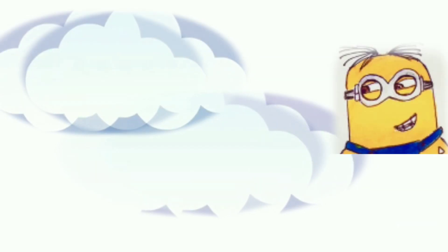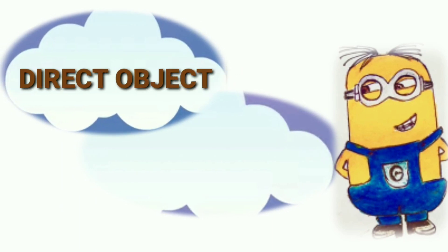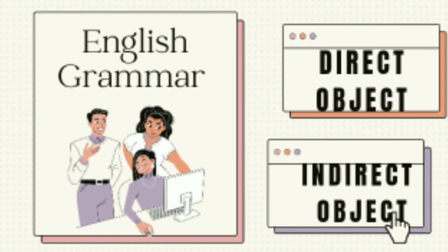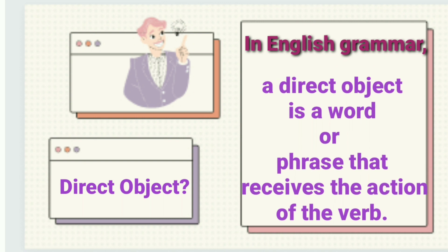Welcome to my channel. Bismillahirrahmanirrahim. Hi friends, in this video we will learn about direct object and indirect object. Let's get started. In English grammar, a direct object is a word or phrase that receives the action of the verb.